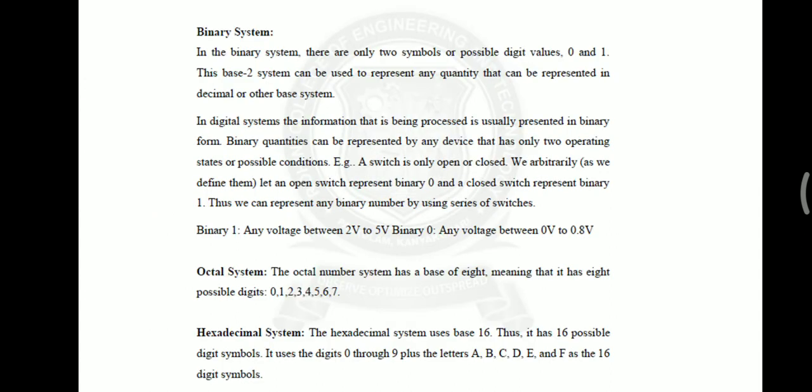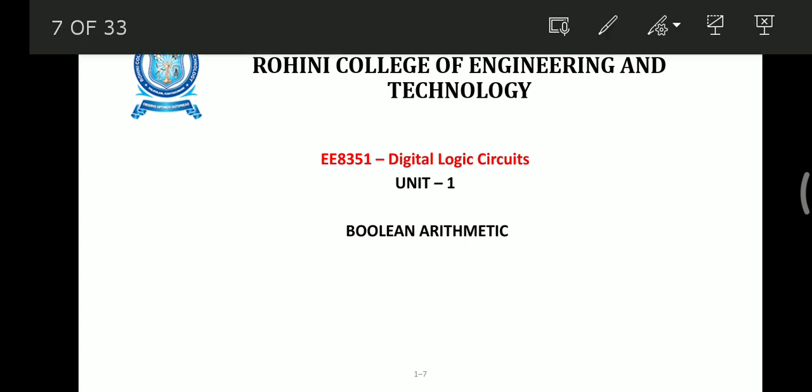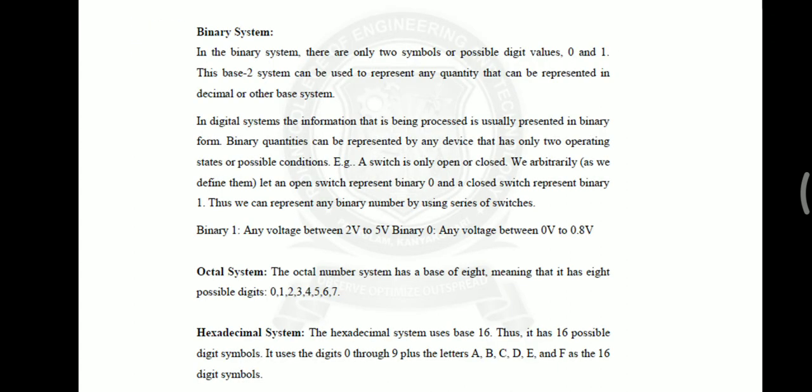The next number systems and their examples are also covered: the binary number system with its examples, the octal number system with its examples, and the hexadecimal number system. That concludes this section. Thank you.